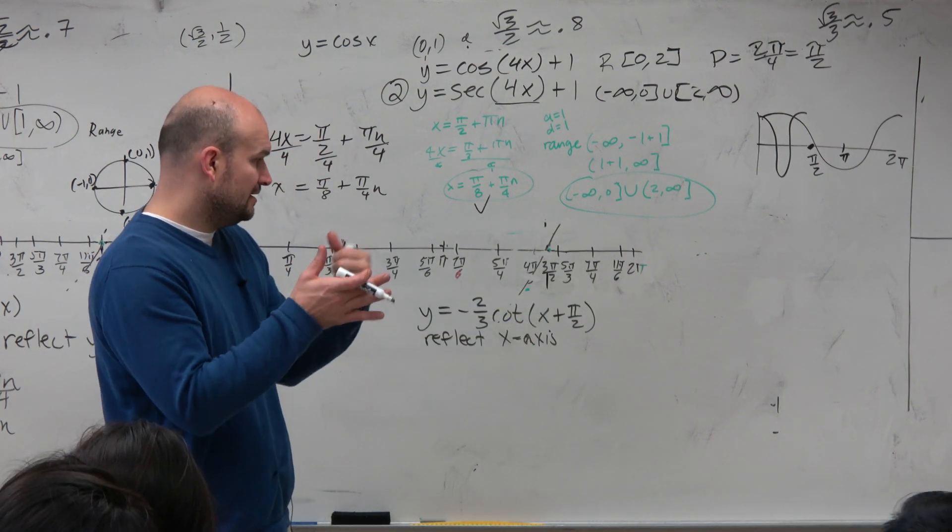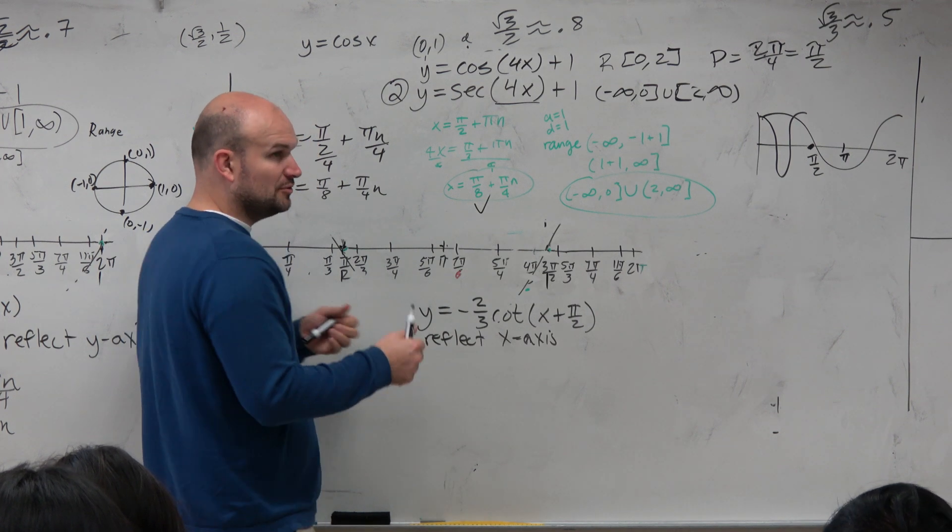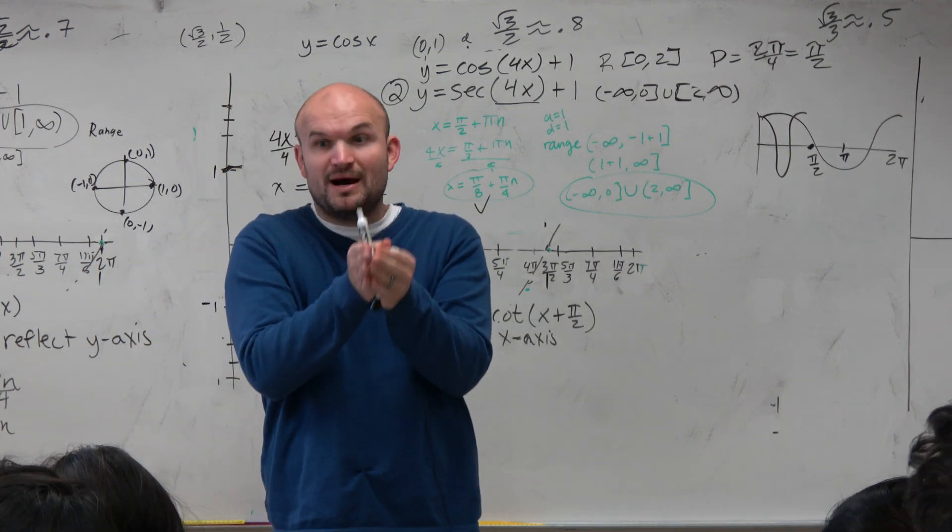We have cotangent. Now again, we know that our original period was at 0 or pi, right?